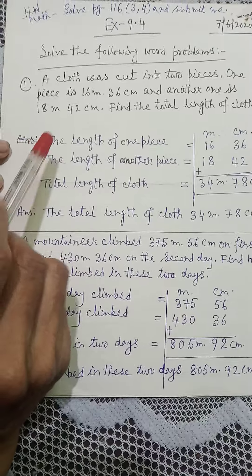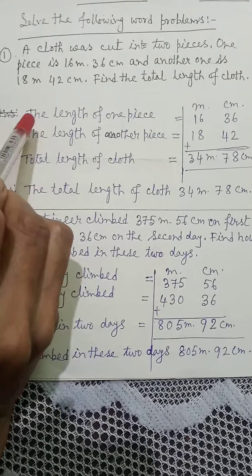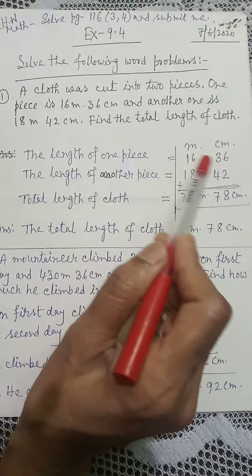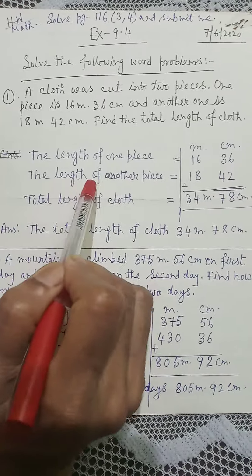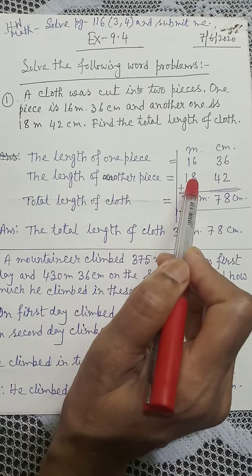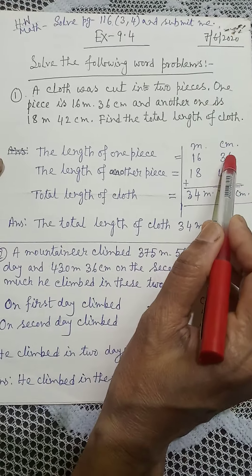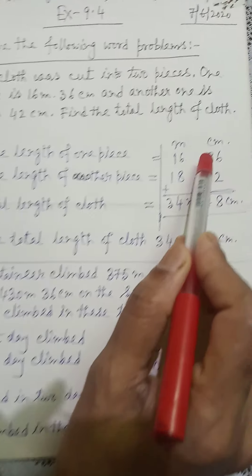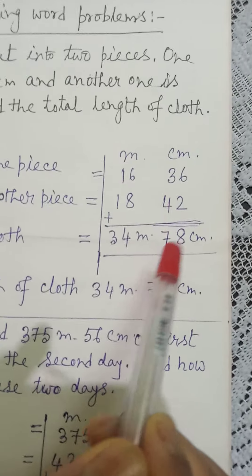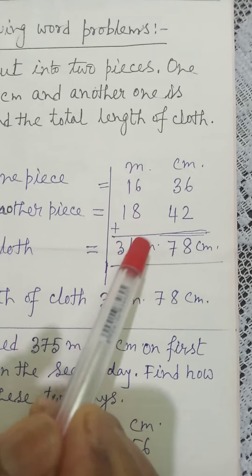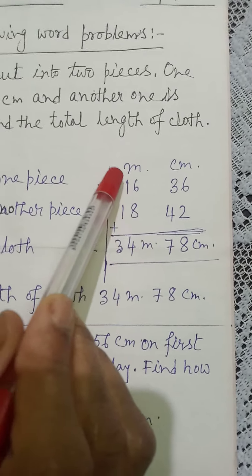Here we will add. The length of one piece is 16 m 36 cm, the length of another piece is 18 m 42 cm. We will add: 6 plus 2 is equal to 8, 3 plus 4 is equal to 7, 8 plus 6 is equal to 14, write 4 and carry 1.